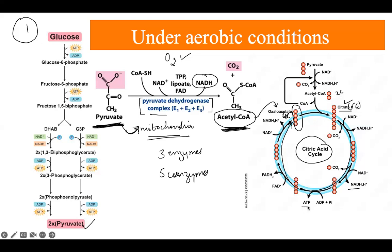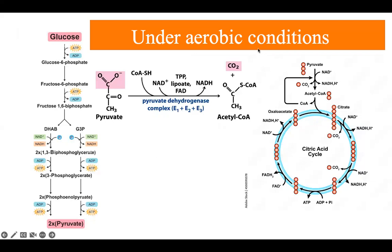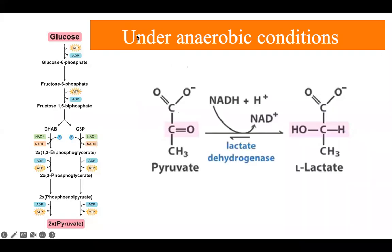After the formation of citrate, the further reactions of the Krebs cycle take place, producing a lot of energy across the different reactions of this pathway. So basically, under aerobic conditions, pyruvate enters the mitochondria and subsequently enters the Krebs cycle.